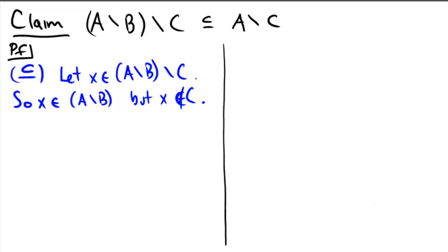Okay, so x is not in c. But x is in a minus b. So what does that actually mean? So now we have x is in a minus b, which means x better be in a. And x is not in b.